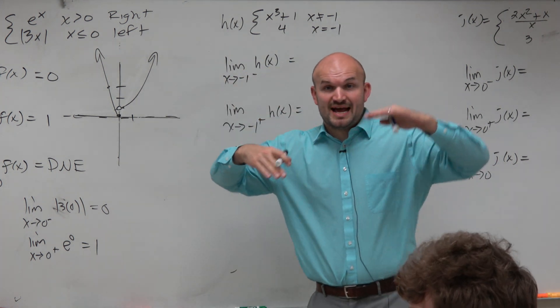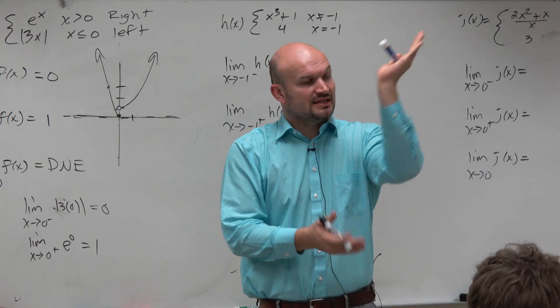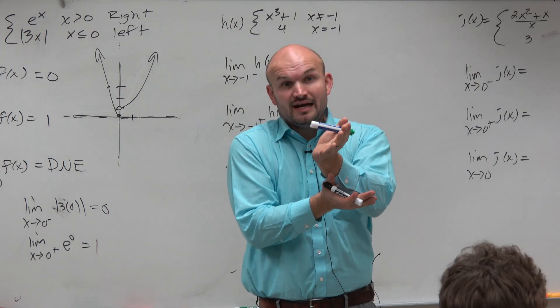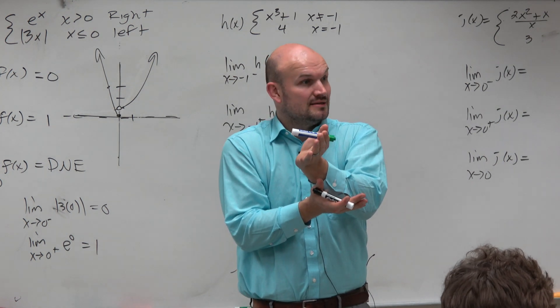So that's important, because when we had a jump, we noticed that the limits from the left and right were different. And the general limit didn't even exist. Correct?